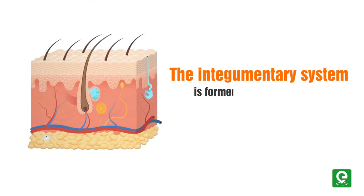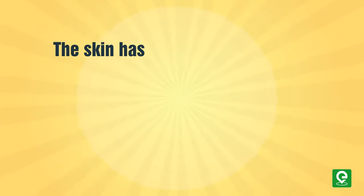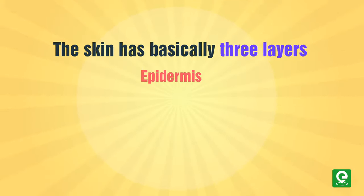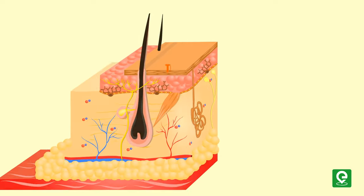The skin is continuous with the mucous membranes lining the body's surface. The integumentary system is formed by the skin and its derivative structures. The skin has basically three layers: epidermis, dermis, and hypodermis.